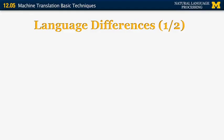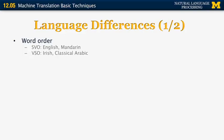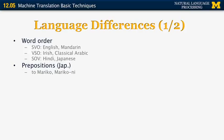Let's see what causes machine translation systems to have problems when translating from one language to another. There are many reasons. The first is word order — some languages are subject-verb-object, for example English and Mandarin; others are verb-subject-object; others are subject-object-verb. When translating between languages from different word order categories, we need syntactic information to figure out where to move the subject, verb, and object. Another example is prepositions in Japanese: they are actually postpositions, placed after the words. So 'to Mariko' in Japanese would be said as 'Mariko ni.'